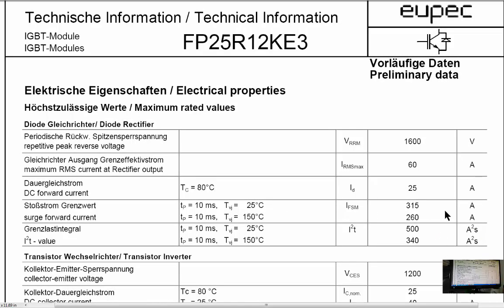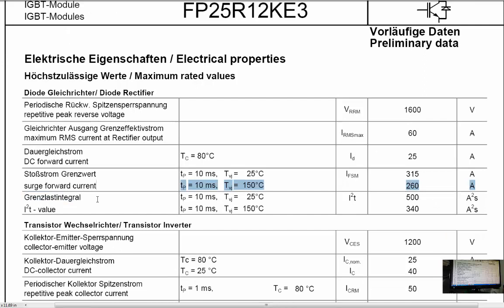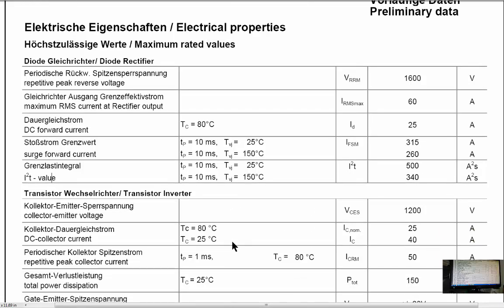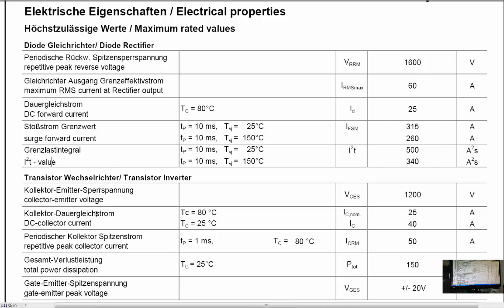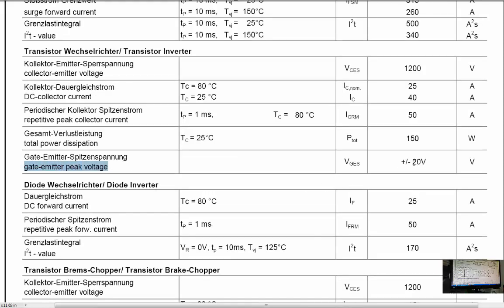The surge current is valid for a maximum of 10 milliseconds. If the surge lasts more than 10 milliseconds, it will cause damage. At 150 degrees centigrade, the maximum surge current is 260 amperes. The I²T load limit is 500 A²s for 10 milliseconds, and 340 A²s at 150 degrees. For the transistor inverter portion: collector to emitter voltage is 1200 volts DC, collector current at 25 degrees centigrade is 40 amperes maximum. Gate to emitter peak voltage is ±20 volts. You can test this module very easily with a multimeter.